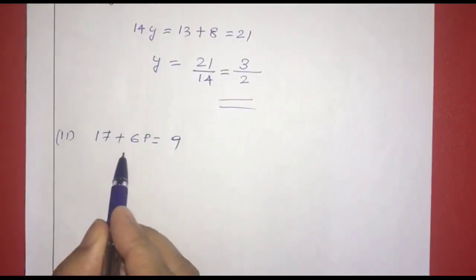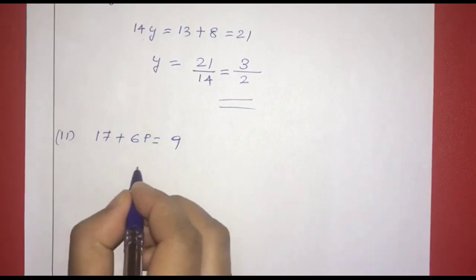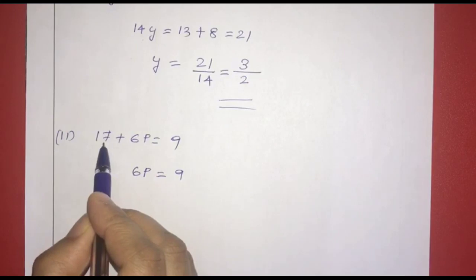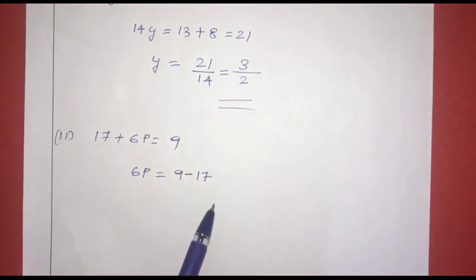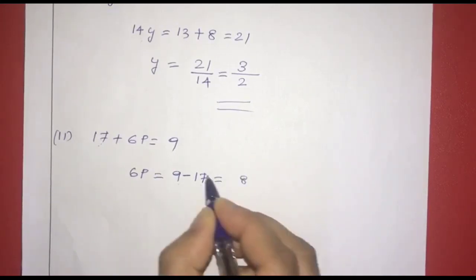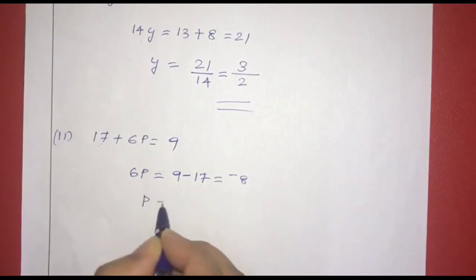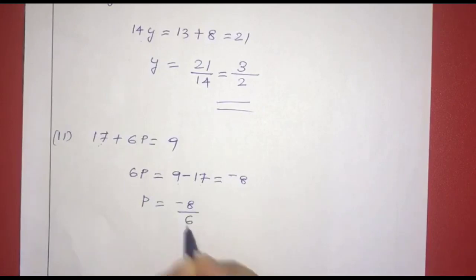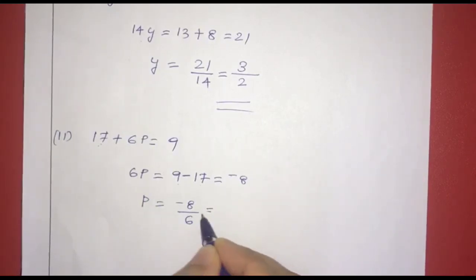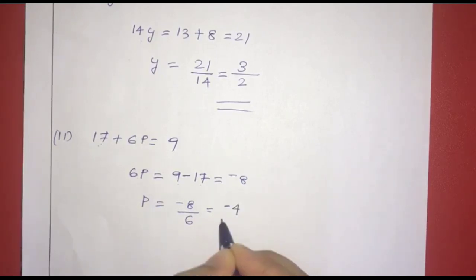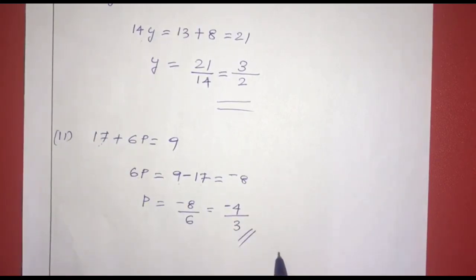Next: 17 plus 6p equals 9. So 6p equals 9 minus 17 equals negative 8. Therefore p equals negative 8 divided by 6. Simplifying by dividing numerator and denominator by 2, p equals negative 4 by 3.